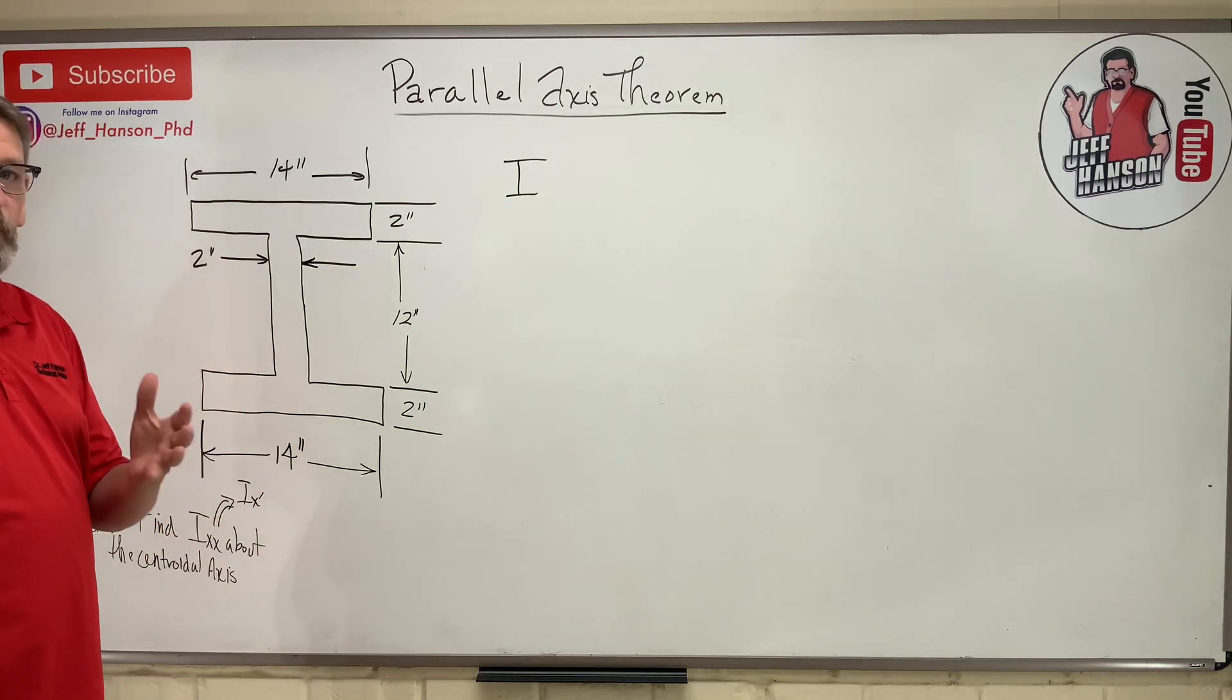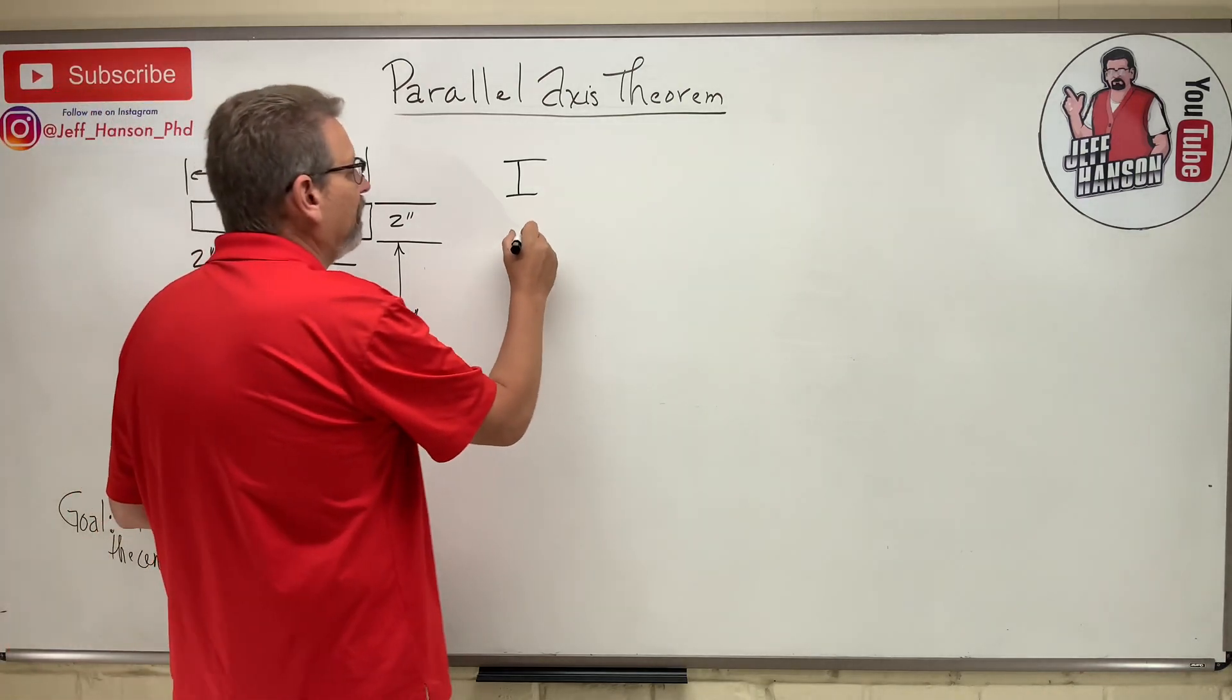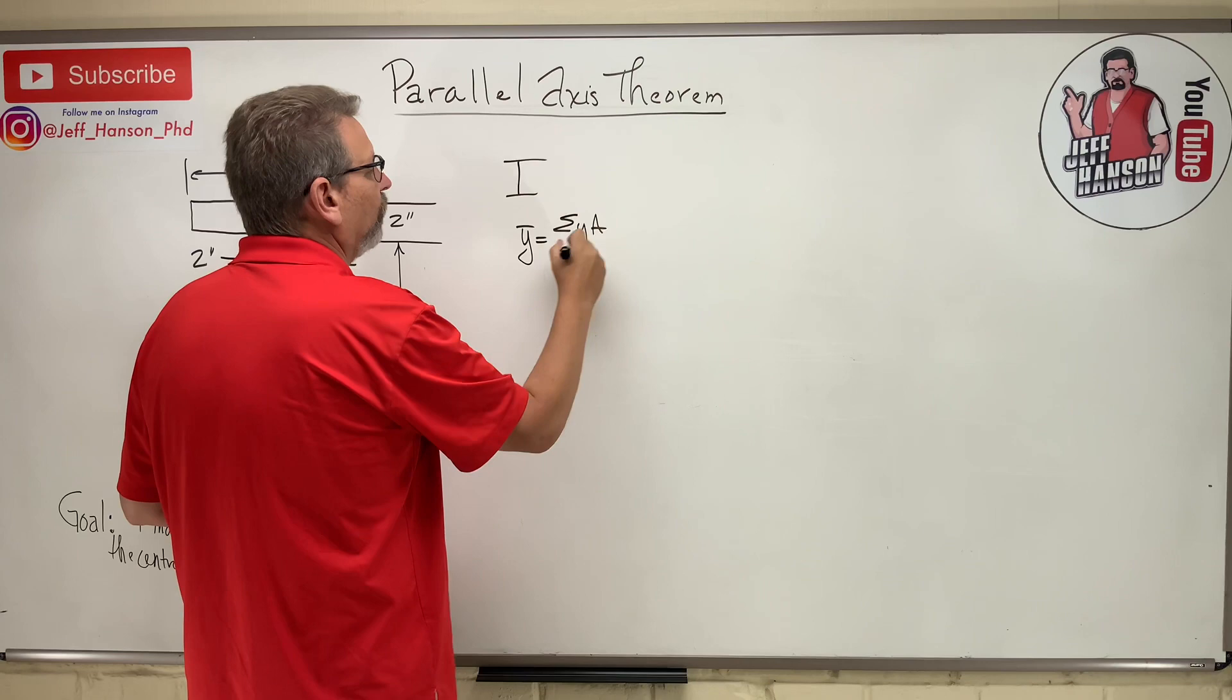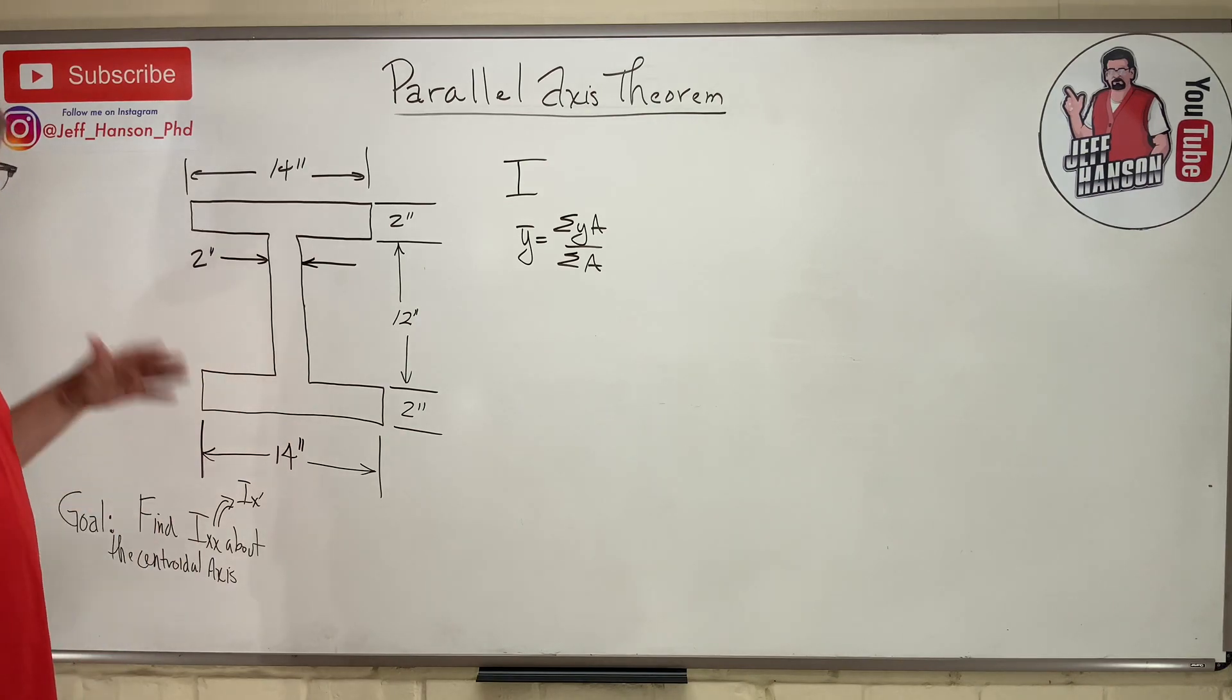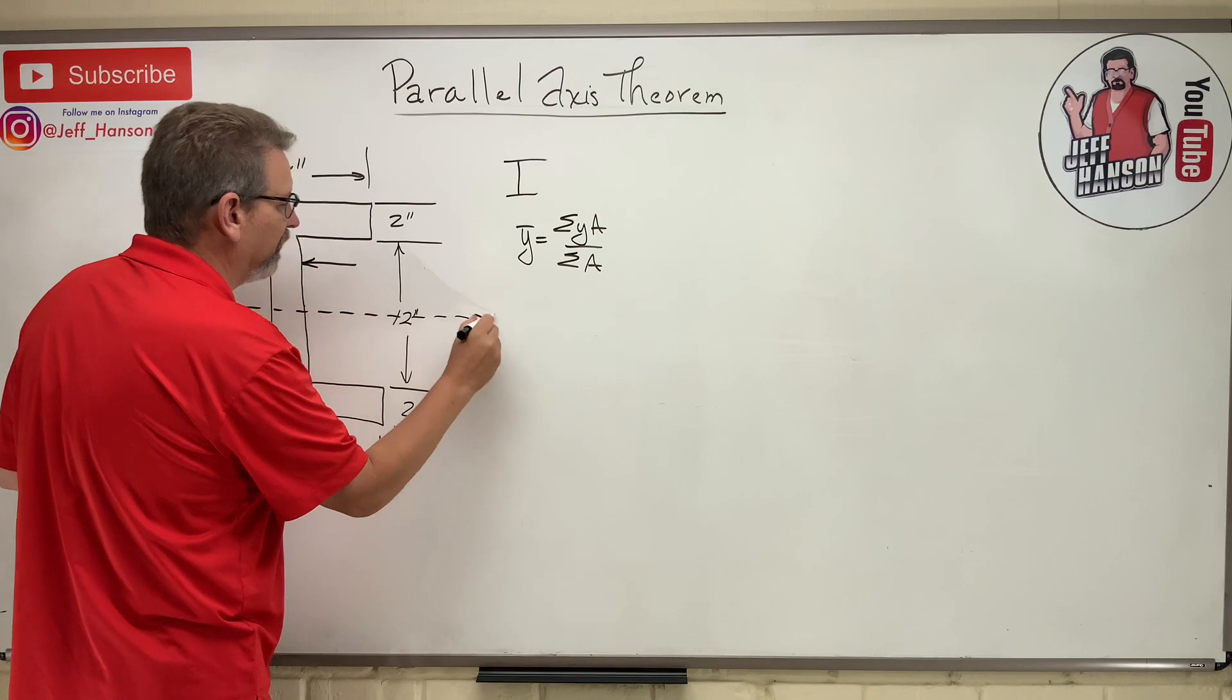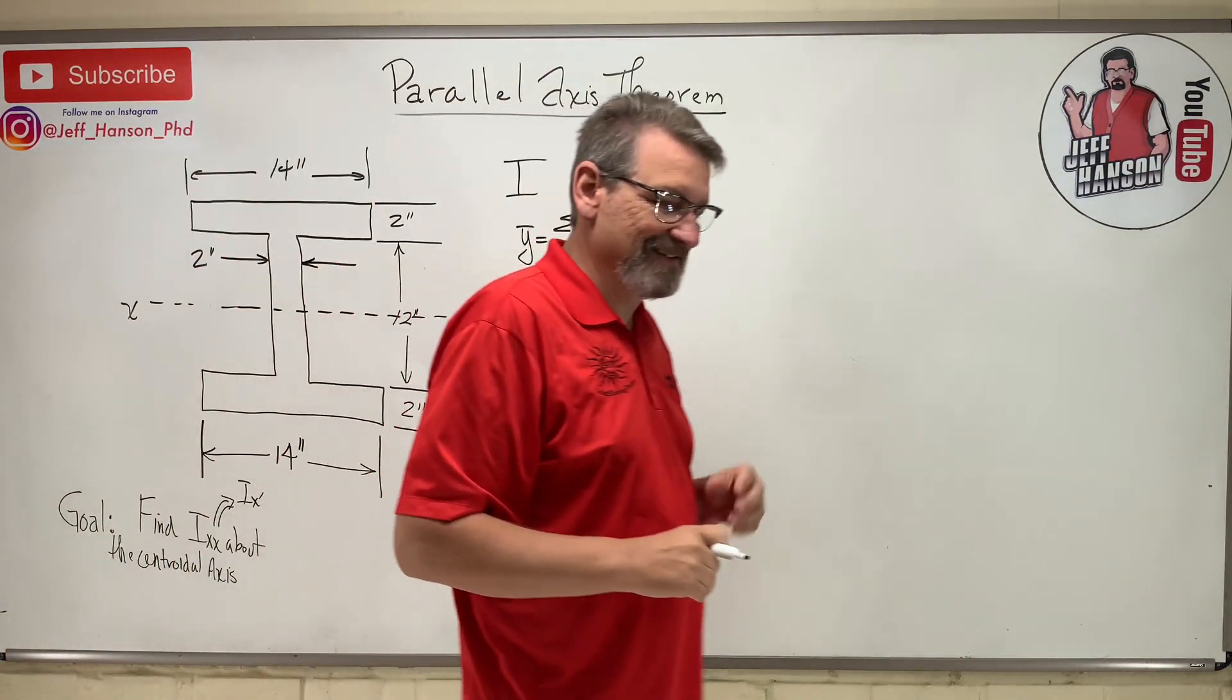So step one would be able to find where the centroid is. Now normally we could use our centroid equation, say y-bar is equal to the sum of the y-a's over the sum of the a's. We know how to do that, but on this shape, since it's symmetric, we already know where the neutral axis is. It's right in the middle. So there is that neutral axis, that centroidal axis.